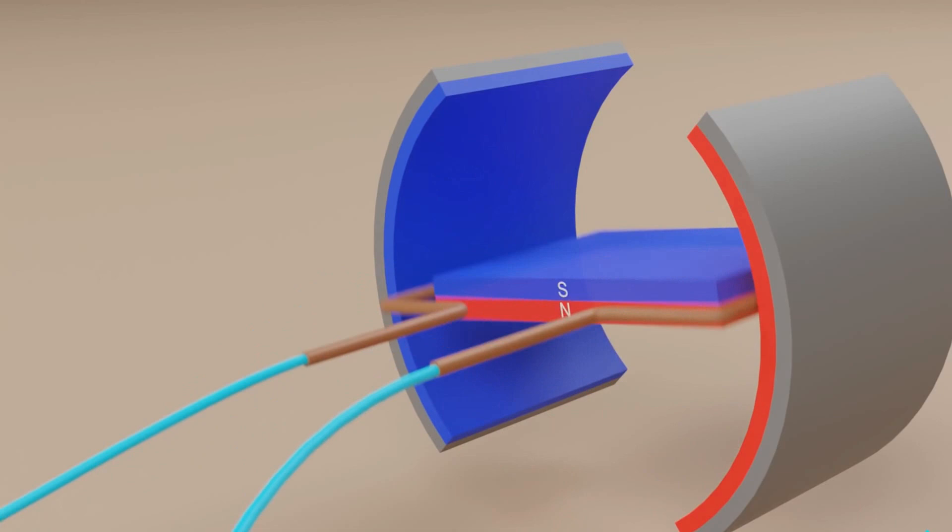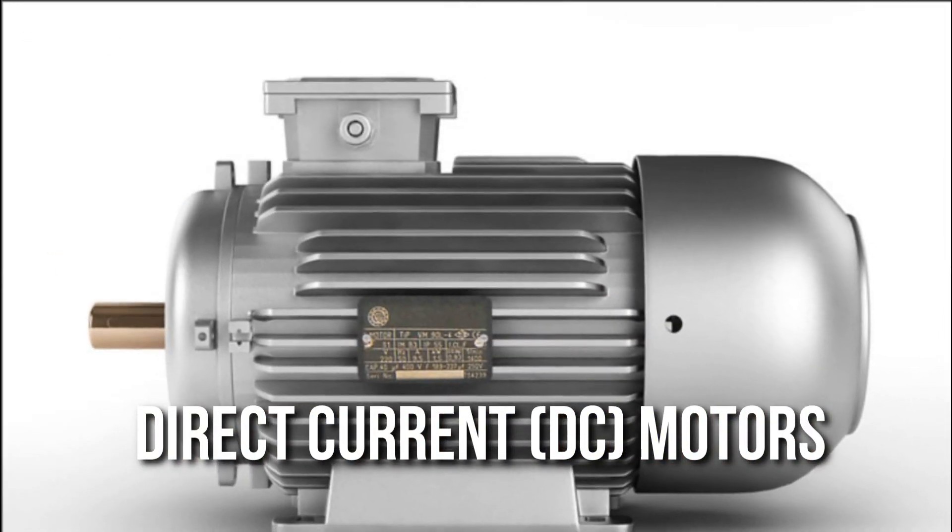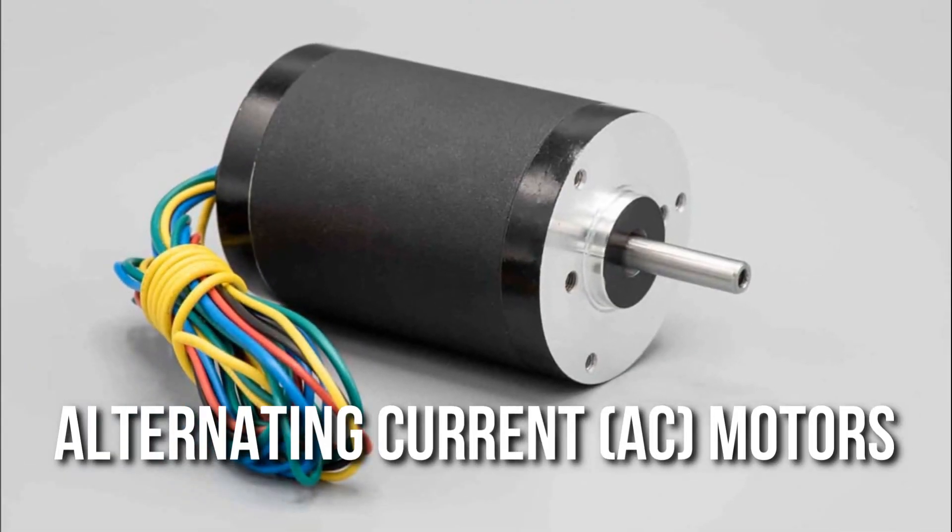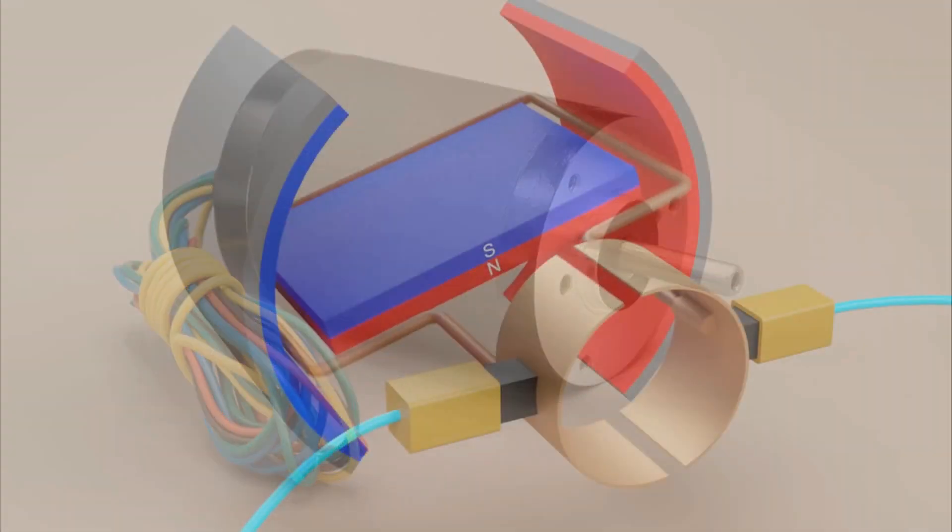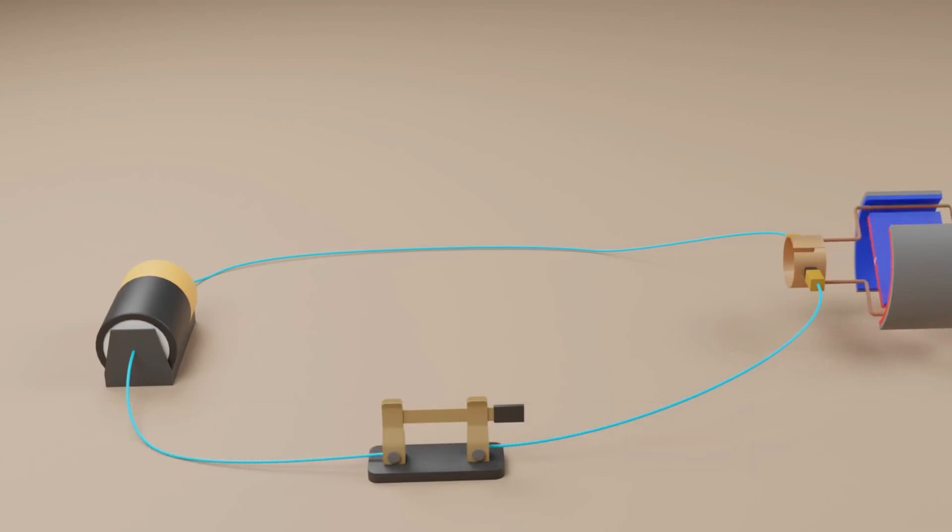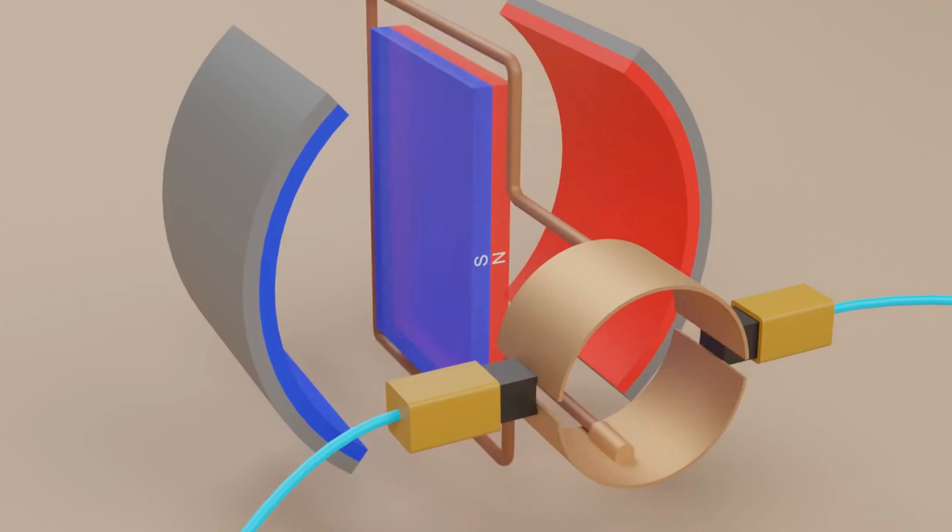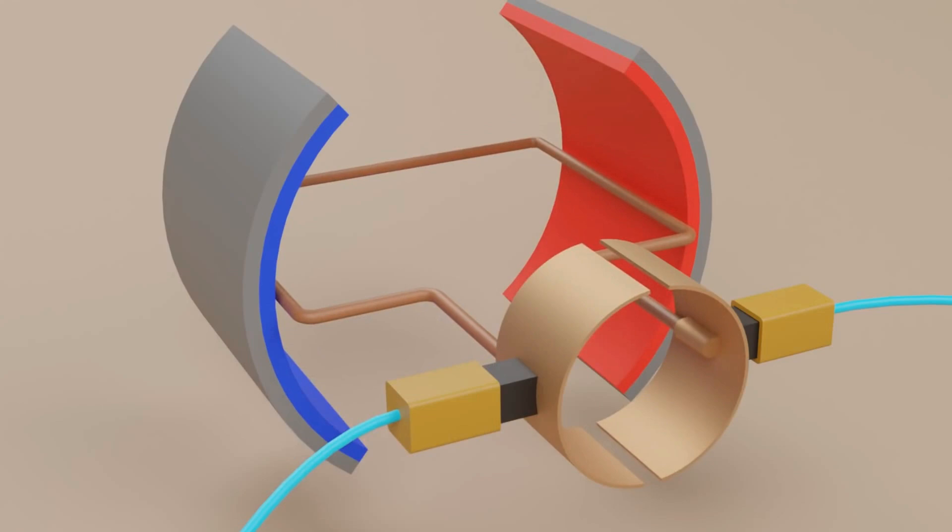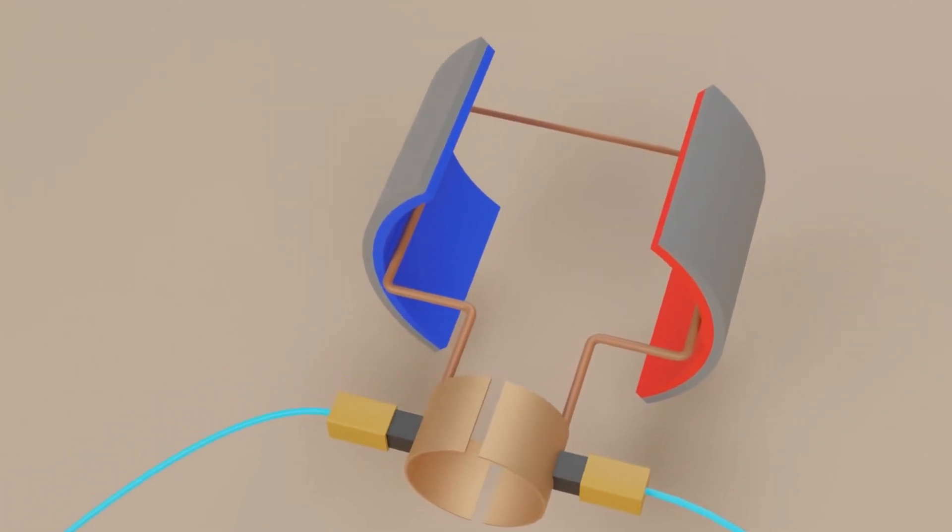To be precise, electric motors fall into two major categories, direct current motors and alternating current motors, depending on the type of power applied. The first DC electric motor was demonstrated by Michael Faraday in England in 1821. The first commercially available motor was the DC type, which became popular in the 1880s as the only power source available was DC.